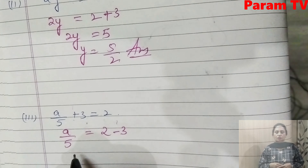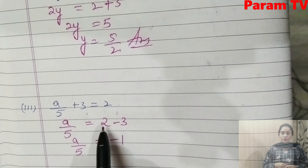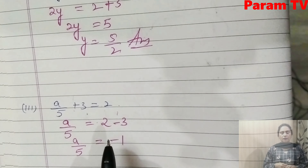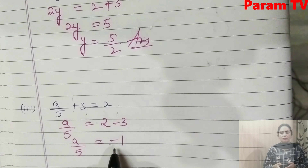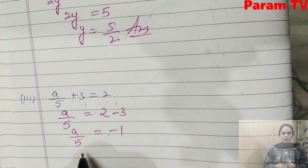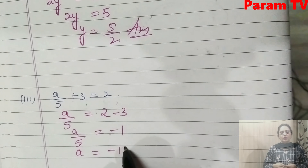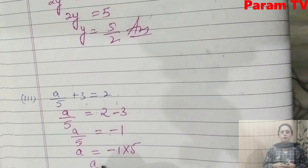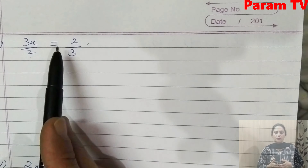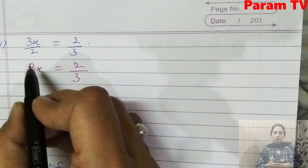Next is a/5 + 3 = 2. So a/5 = 2, and the 3 changes side to minus 3. So a/5 = 2 - 3 = -1. Since one term is plus and one is minus, the minus sign applies to the greater term. So a = -5. This is the answer.